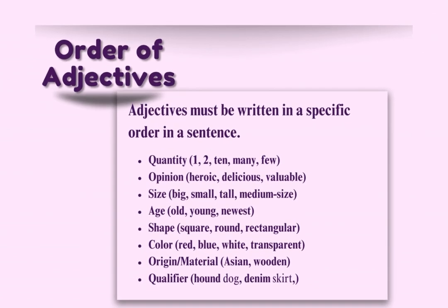These descriptive adjectives can be used as a list in a sentence to give a clearer image of the object. I can say 'I have two books' and you might get a picture in your head of any books you have seen lately. But if I say 'I have two interesting, old, rectangular, red, human skin books that are from ancient times,' you may have a completely different visual in your mind and may have an emotional response to my use of adjectives.